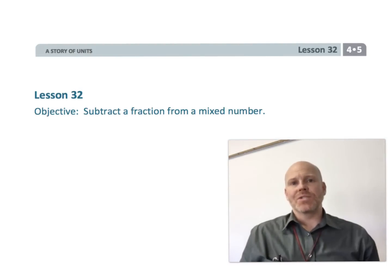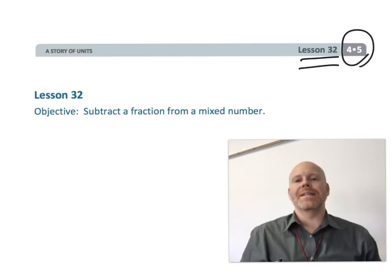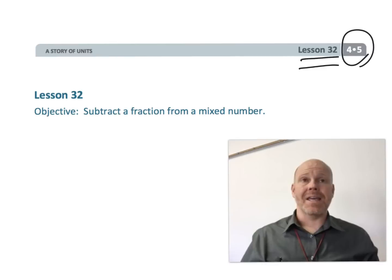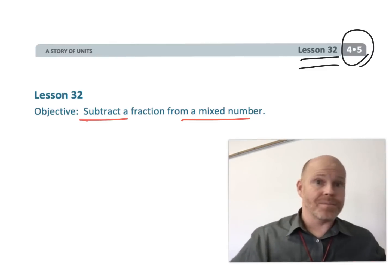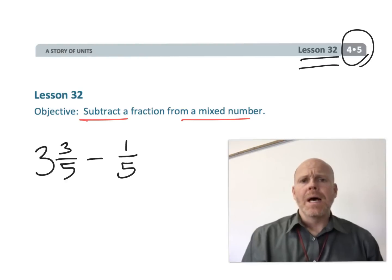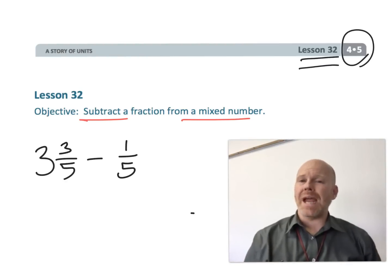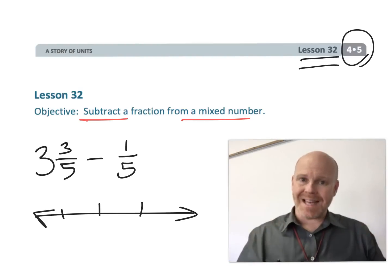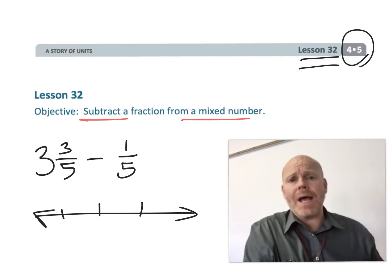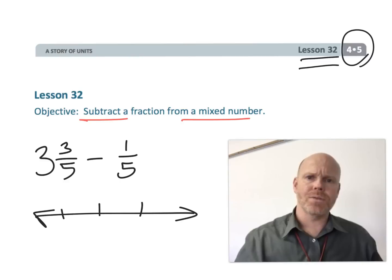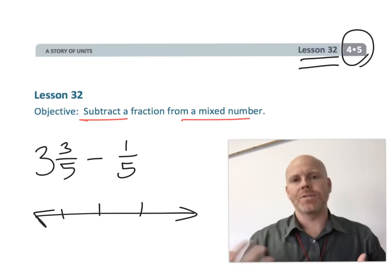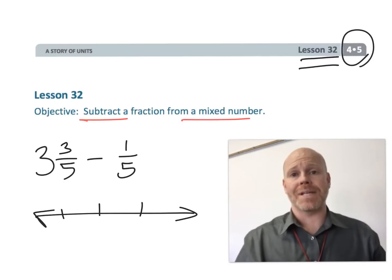This is fourth grade module five, lesson 32. In this lesson, students are going to be subtracting a fraction from a mixed number — something like three and three-fifths take away one-fifth. Students are going to be using number lines, the arrow method, or decomposition to make sense of this kind of problem. Ultimately they'll use the standard algorithm, but instead of jumping there immediately, we're going to use visual representations to build understanding.